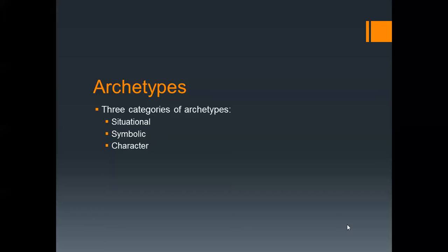Let's review archetypes, and then we'll go into detail and give you some examples of each kind. Archetypes are recurring patterns of character, symbol, or situation that are found in mythology, religion, and stories of all cultures. Archetypes are embedded deep into humanity's collective unconscious. They teach us how to live under any circumstance. Humans didn't invent archetypes, but we definitely express them in our art, literature, and religion. The three categories are situational archetypes, symbolic archetypes, and character archetypes.